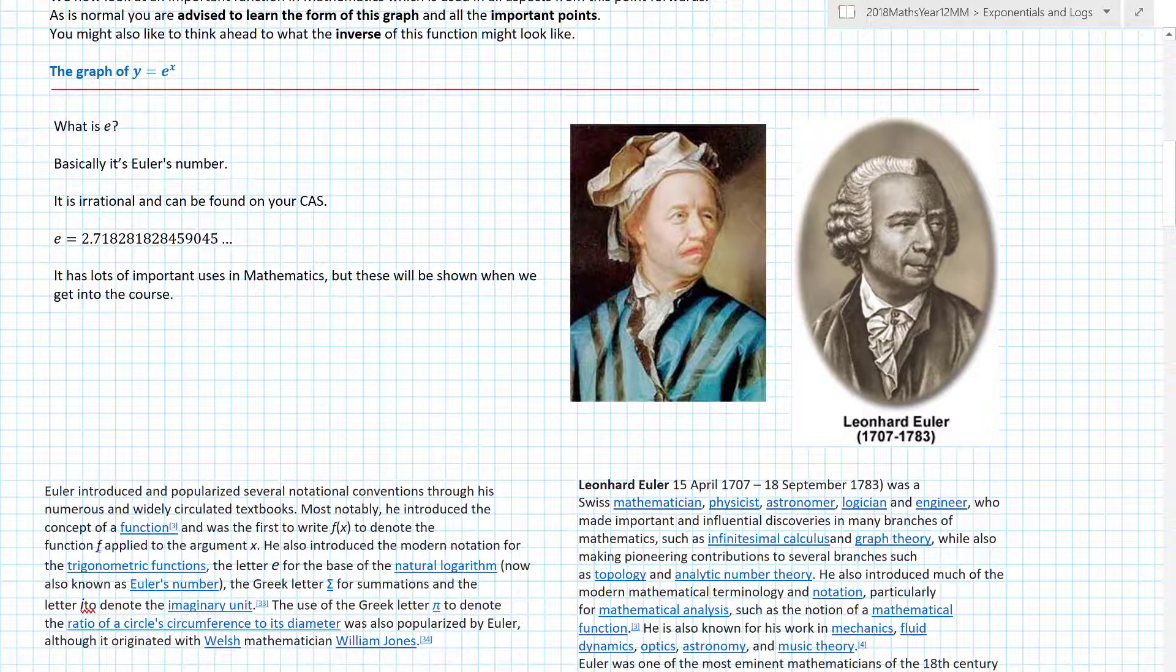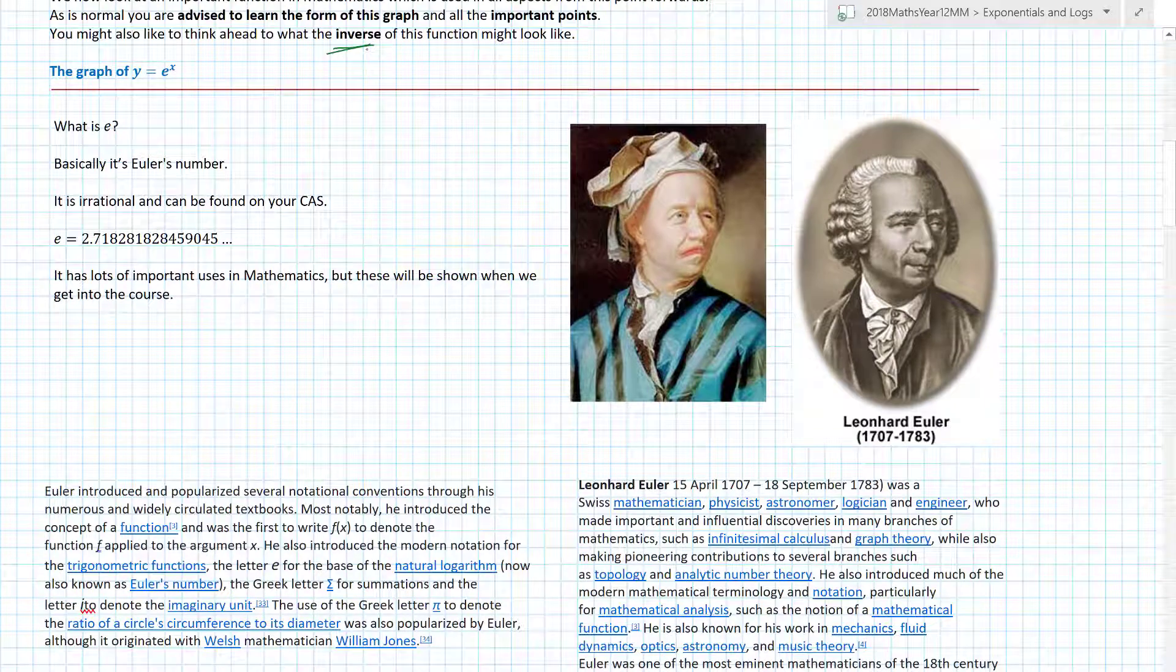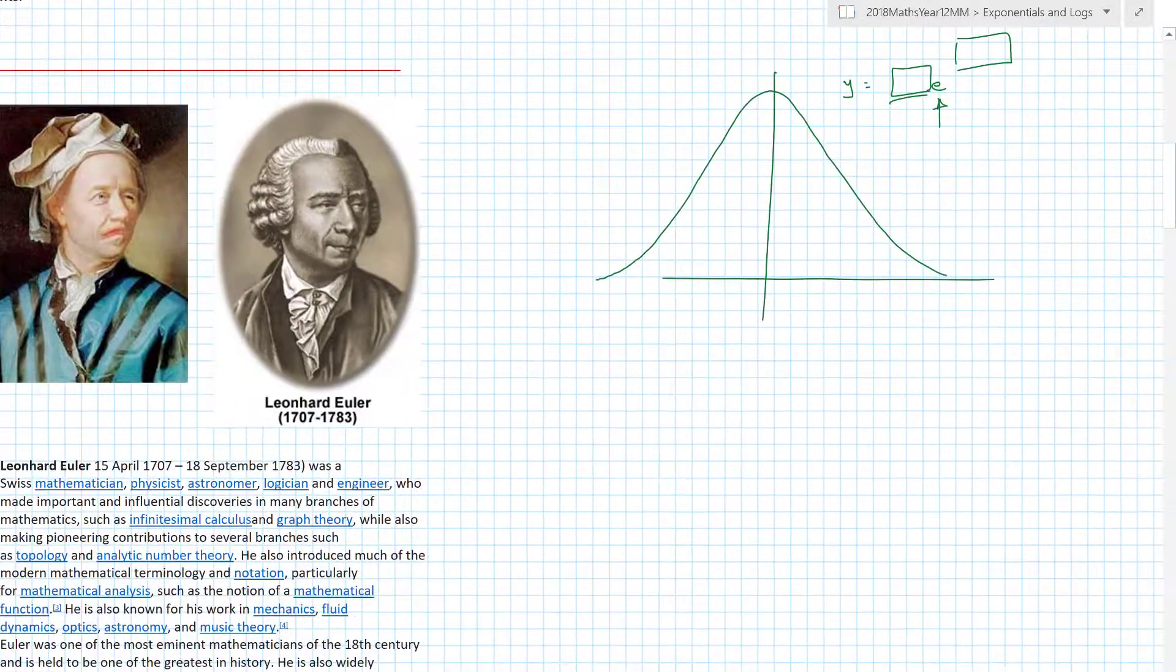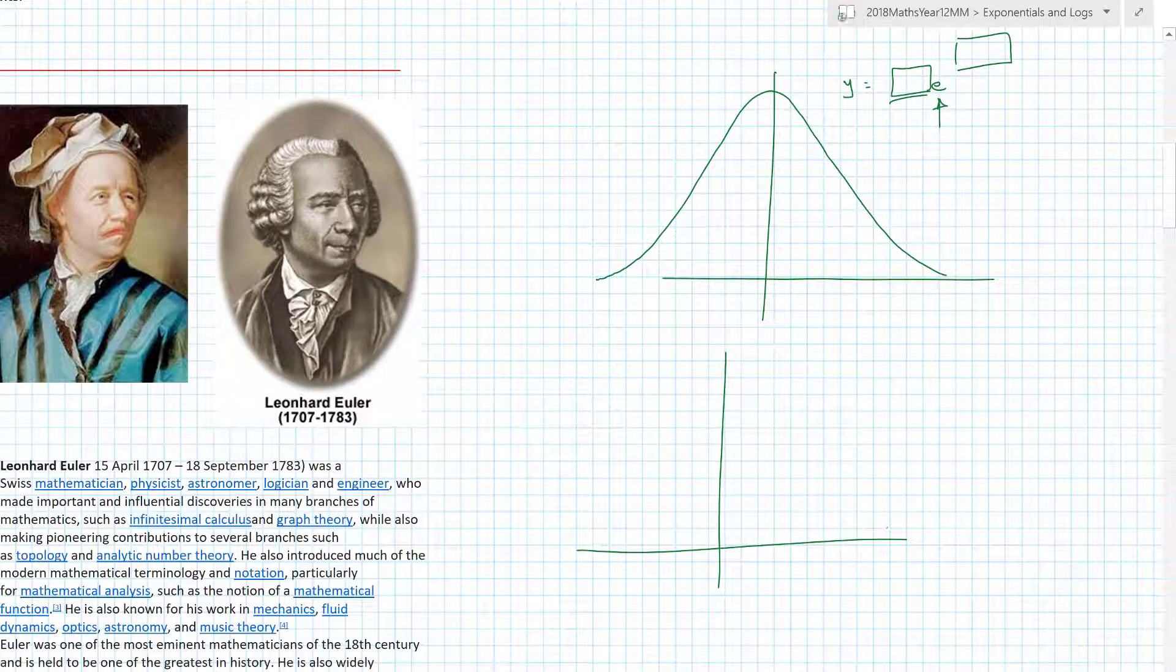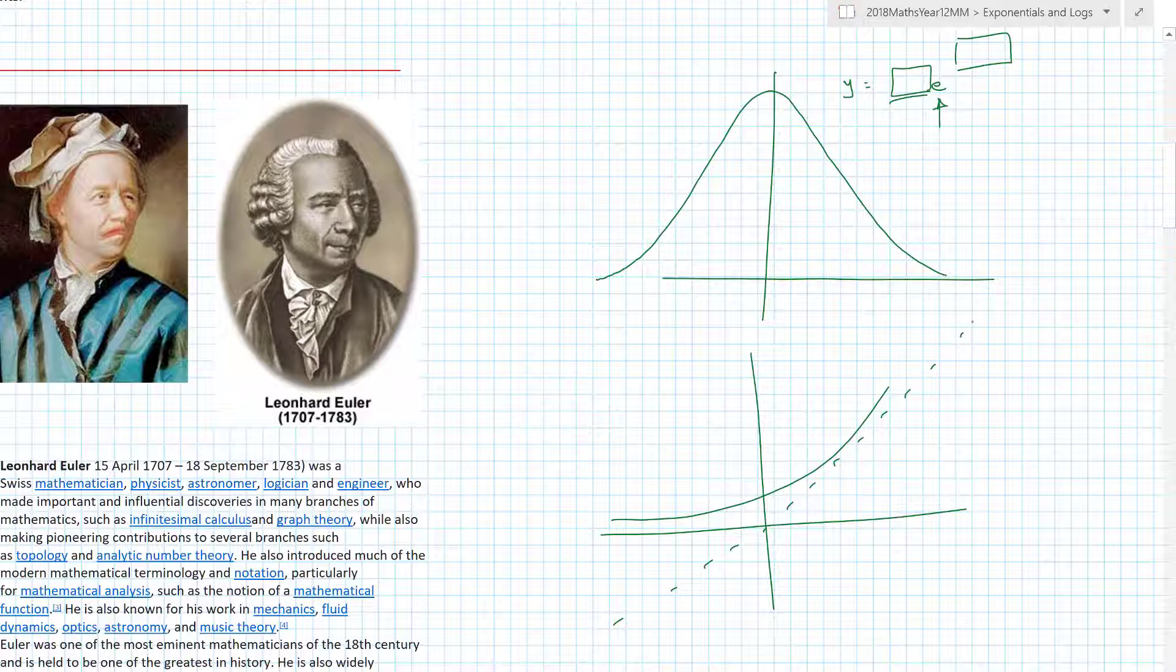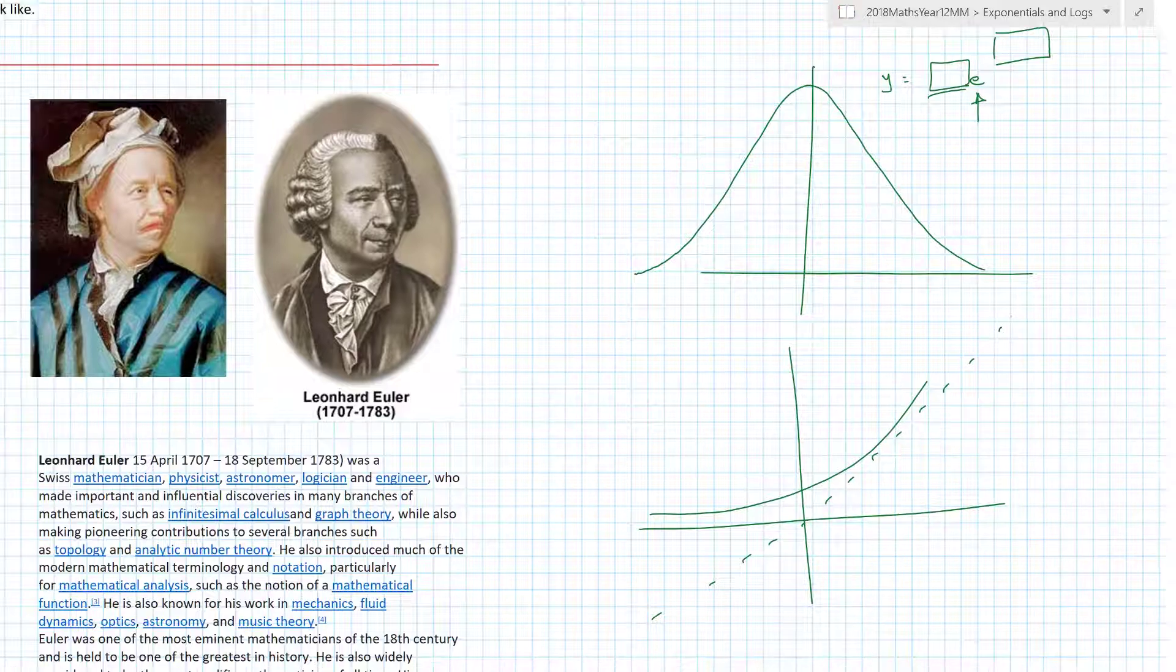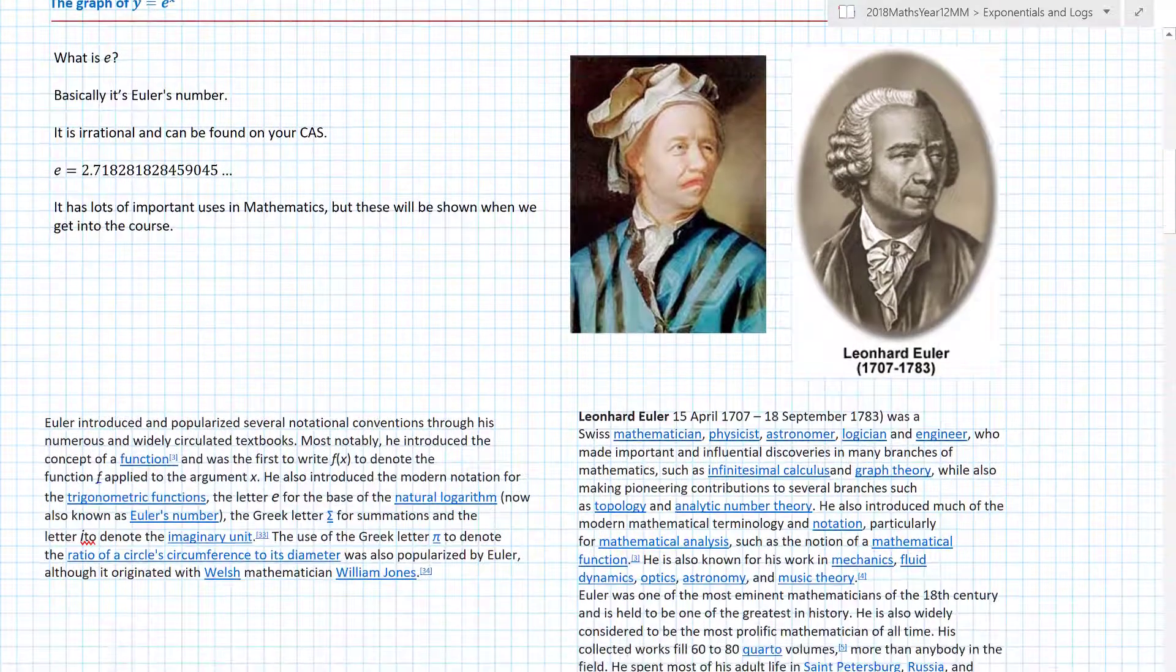I say here try and think about what the inverse of this function might look like. You can already work out the inverse in terms of what it would look like, because if we know a standard exponential looks like this and we can reflect in the line y equals x, then you should be able to work out what the inverse is at least going to look like even if you can't find the equation.